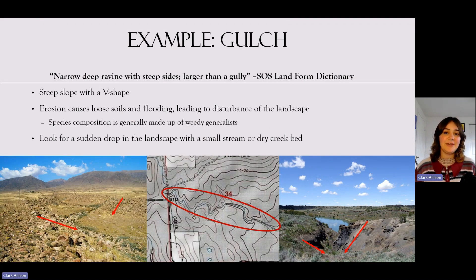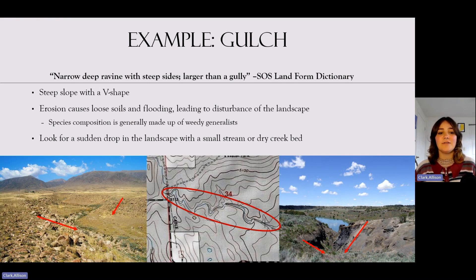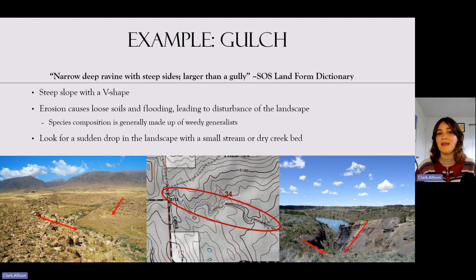A gulch is a narrow, deep ravine with steep sides that is larger than a gully. On the ground, you'll be looking for a steep slope with a V-shape or a sudden drop in the landscape with a small stream or dry creek bed running through it. This is caused by erosion of loose soils and flooding, which leads to landscape disturbance, meaning the species composition is mostly made up of weedy generalists and workhorse species.